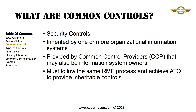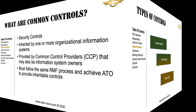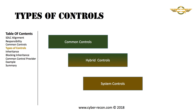You may be asking yourself: what exactly is a Common Control? A Common Control is a Security Control that is inherited by one or more organizational information systems and is provided by a Common Control Provider. It may also be provided by an Information System Owner and presented as a Lateral Control. It must follow the same RMF process to achieve an Authorization to Operate, or ATO. A Common Control is one of three types of controls recognized by the RMF. In addition to Common Controls, there are System Controls implemented by the Information System Owner, and Hybrid Controls implemented as a Common Control that is enhanced by additions at the Information System level.